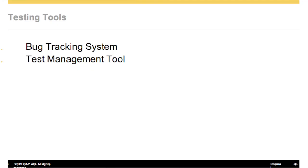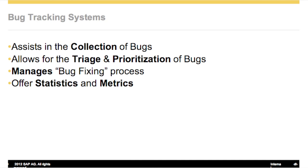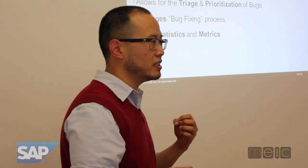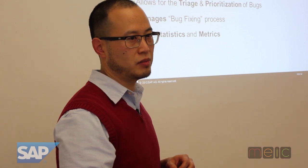Some of the tools we have are not just about helping you test — they're about helping you fix things. The two tools I want to show you are a bug tracking system and a test management tool. Bug tracking systems assist in the collection of bugs. They don't actually do any testing; they provide a way of collecting all your different bugs, allowing you to triage and prioritize them, because you don't fix bugs in the order they're reported.